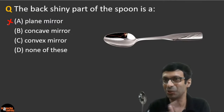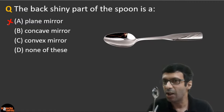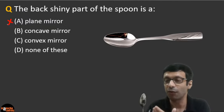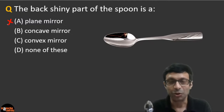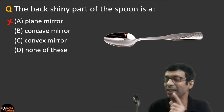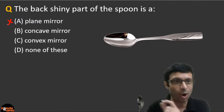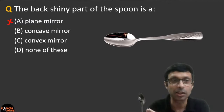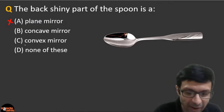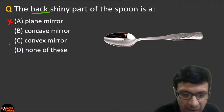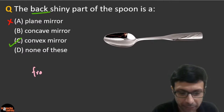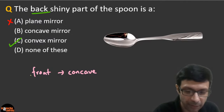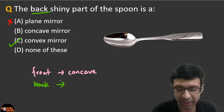Look at yourself in the back portion of the spoon. No matter where you move it, you'll see an upright and diminished image. If you look at the front part, you see an inverted version of yourself — that means the front is a concave mirror. The back portion always gives a diminished and upright image — it bulges outwards, so it is a convex mirror. The front part curves inwards — concave; the back part bulges outwards — convex.